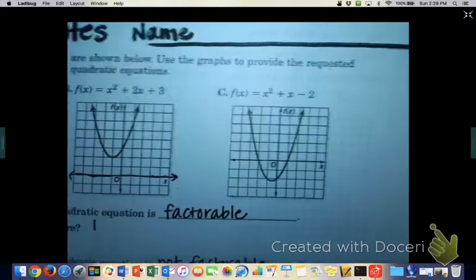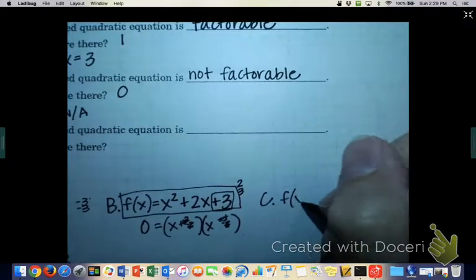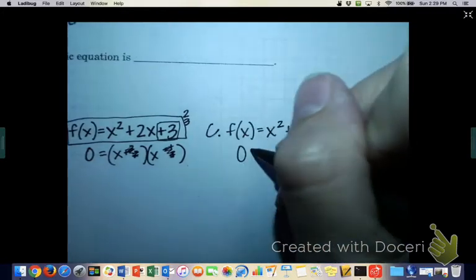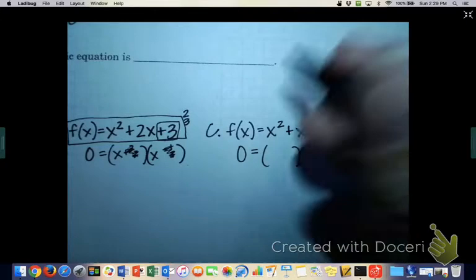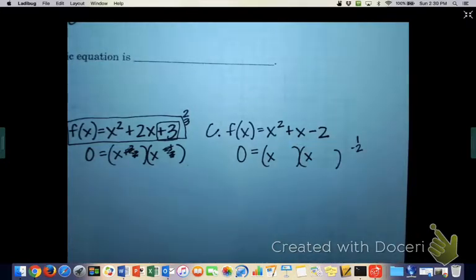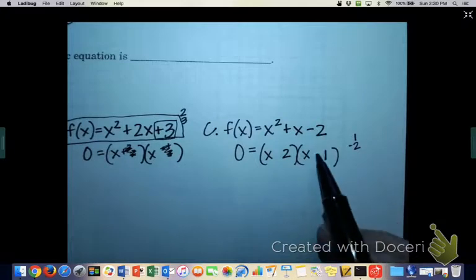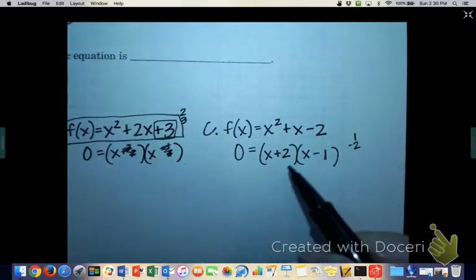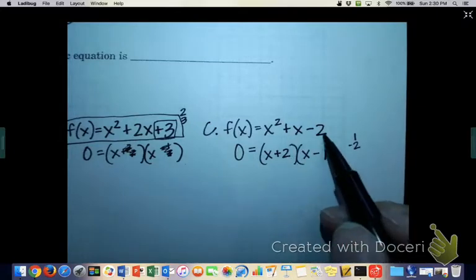Last one on this notes page. For C, we have f(x) = x² + x - 2. Let's see if we can factor this one. What can we add to get 1x and multiply to get negative 2? x's would be at the beginning. I'm thinking 2 and 1, and because we need to multiply and get a negative, one of them needs to be negative. But when we add them, we need a positive, so the bigger number should be positive. When we add 2 and negative 1, you get positive 1 — that works. And when we multiply 2 and negative 1, you get negative 2 — that works too.